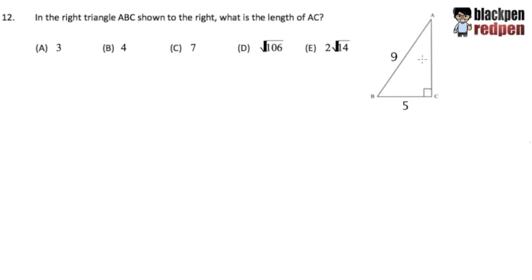For number 12, we are given this right triangle, triangle ABC, and we know that the length of AB is equal to 9, the length of BC is equal to 5, and our goal is to find out the length of AC, namely this unknown side.